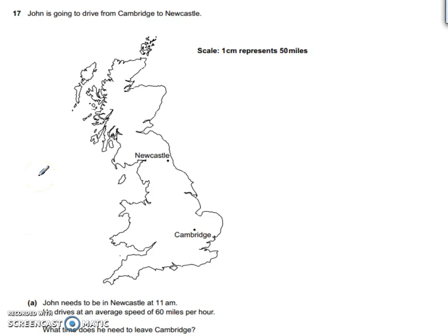Question 17. John is driving from Cambridge to Newcastle. We've got a map here of Cambridge to Newcastle and it tells us that the scale is 1cm represents 50 miles. John needs to be in Newcastle by 11am. He drives an average speed of 60mph. What time does he need to leave Cambridge?